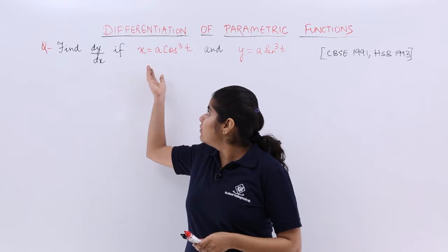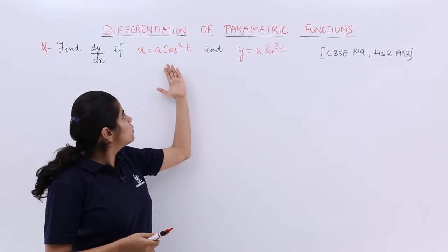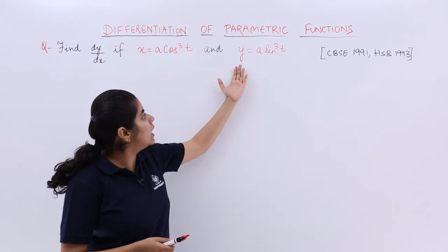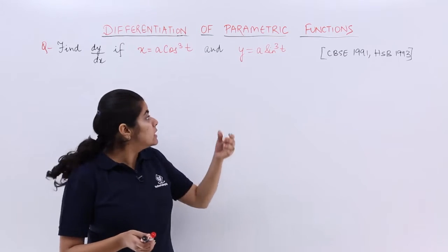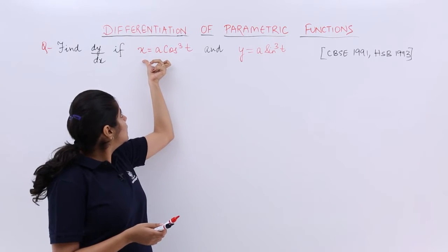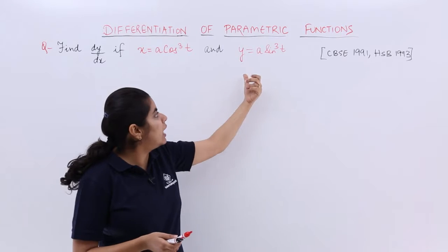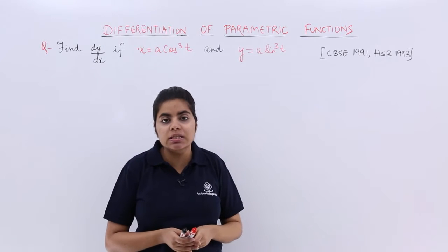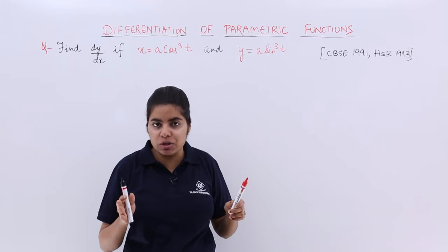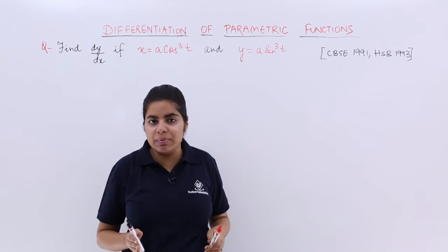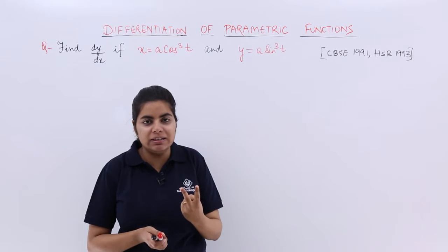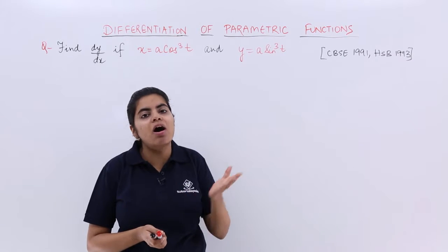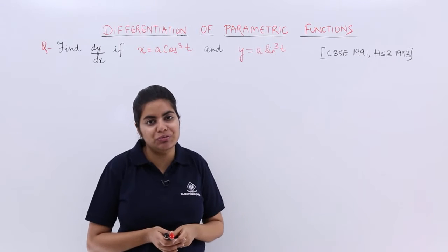Now the question says find dy/dx if x equals a cos cubed t and y equals a sin cubed t. We already know that in this question x is a function of t, y is a function of t. That means it is a concept of parametric functions. T is the parameter involved, and straight away from the two steps which we studied earlier we can easily find out the solution of this question.